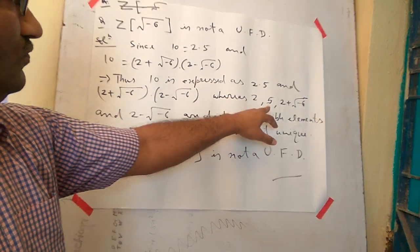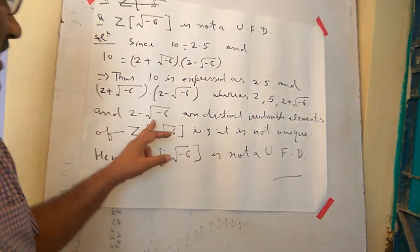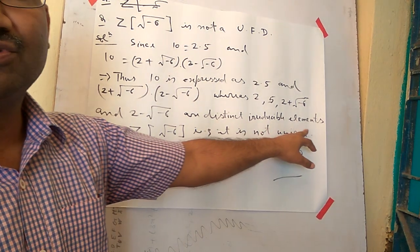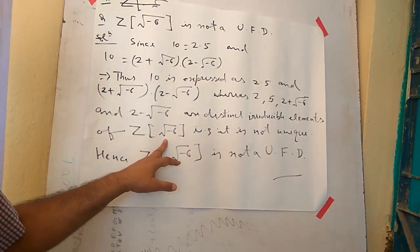Whereas this 2, 5, 2 + √-6, and 2 - √-6 are distinct irreducible elements of Z[√-6].